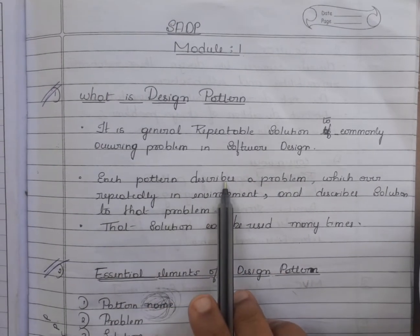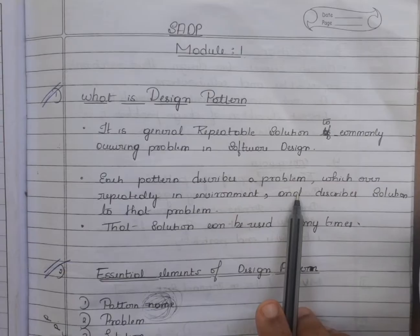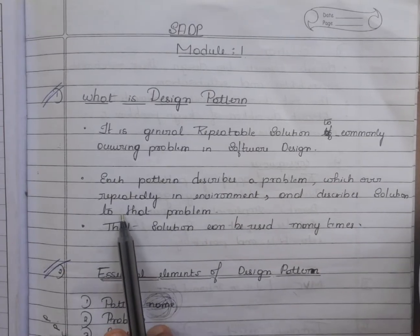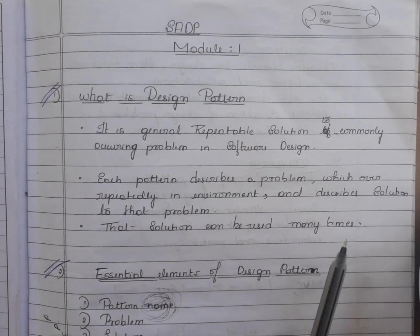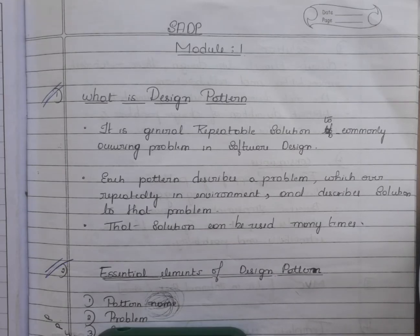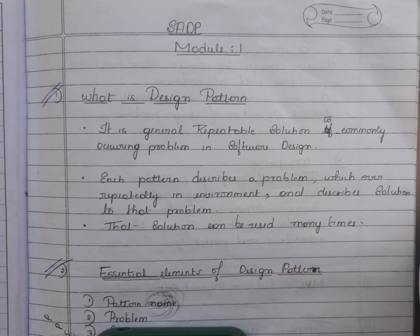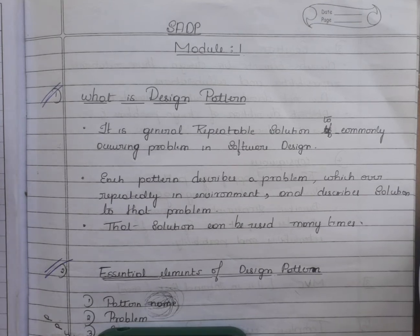Each pattern describes a problem which occurs repeatedly in the environment and describes the solution to that problem. That solution can be used in many ways — it's a problem which occurs over and over again, and we describe the core solution in a way that you can use it many times without ever doing it the same way twice.